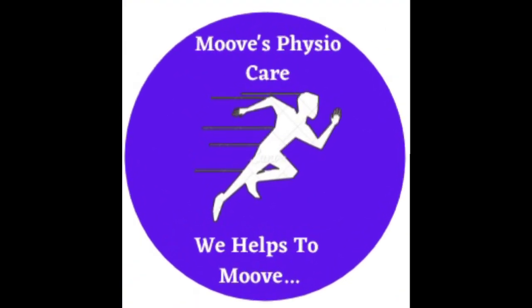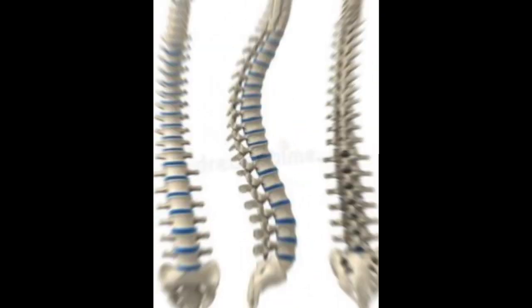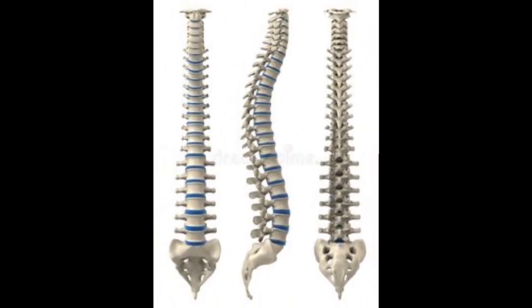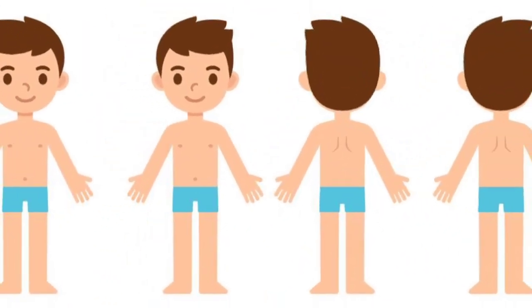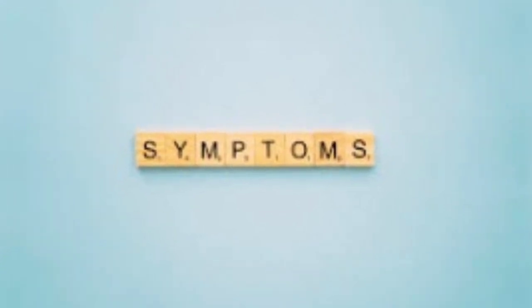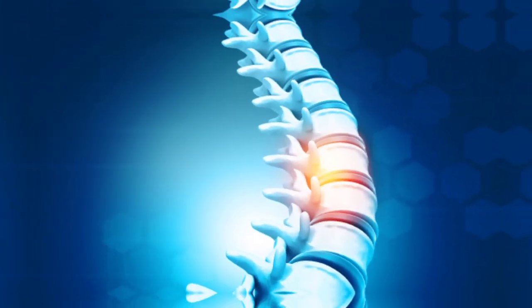Hello everyone. Today we are going to discuss about spinal cord injury, SCI. A spinal cord injury is damage to the spinal cord that causes temporary or permanent changes in body function. Symptoms may be felt in the parts of the body supplied by the spinal cord below the level of the injury.